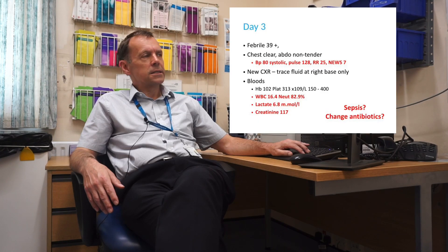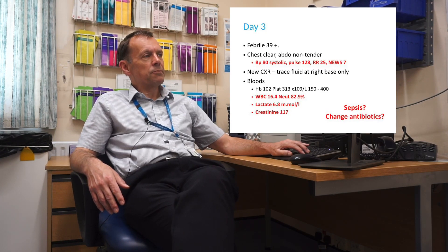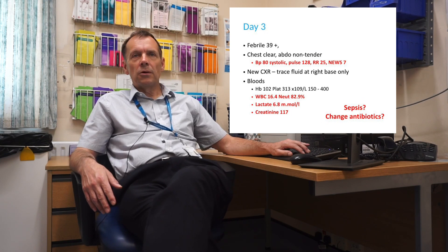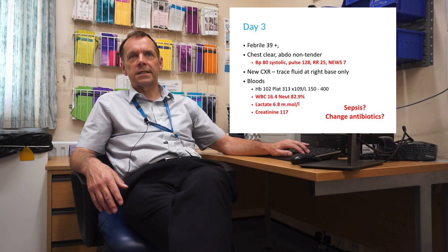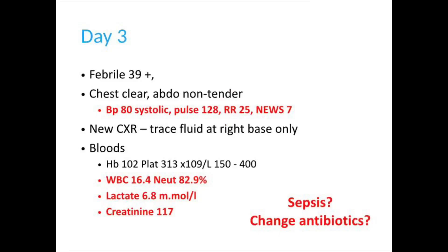However, on day three there's a clear deterioration. She's still febrile, but now her blood pressure is 80 systolic, her pulse is 128, her respiratory rate is 25, giving her a NEWS score of 7 — a significant deterioration mandating urgent action. Her chest X-ray has not much changed, but her white cell count has risen further to 16.4, she now has an acute kidney injury with a creatinine of 170, and a lactate of 6.8. So does she have sepsis? Yes. Do we need to change antibiotics?